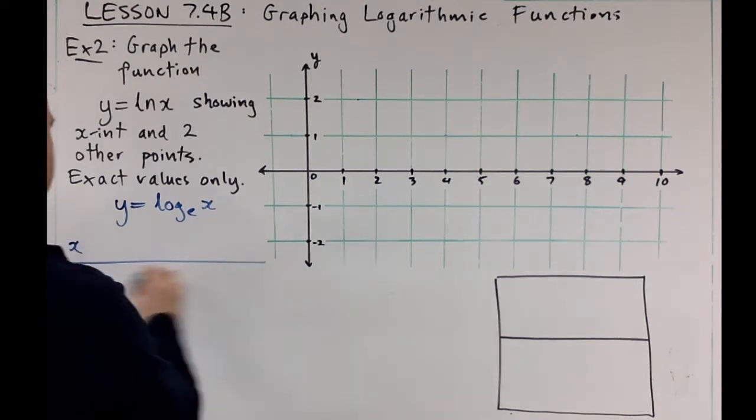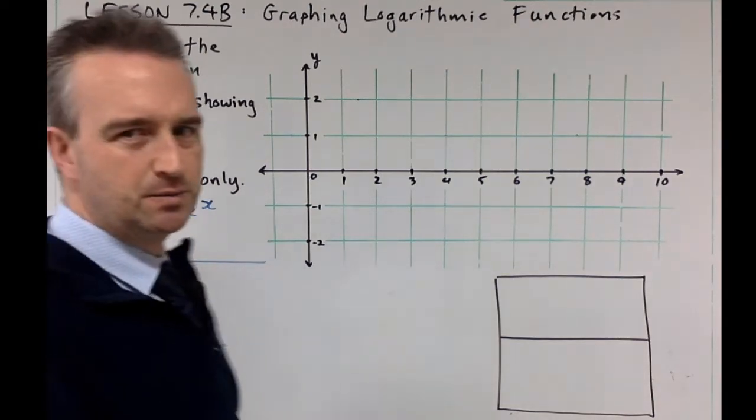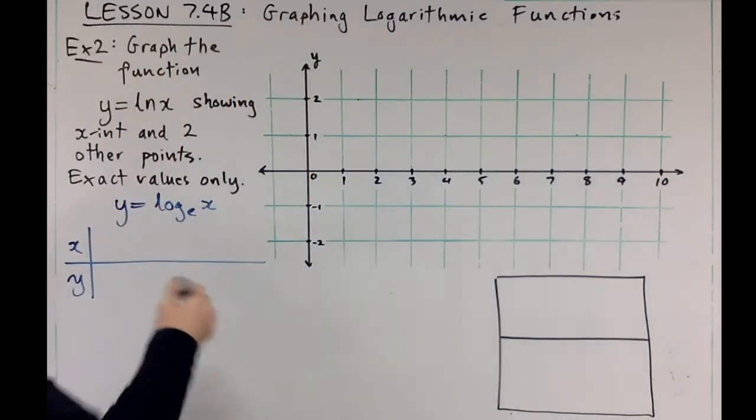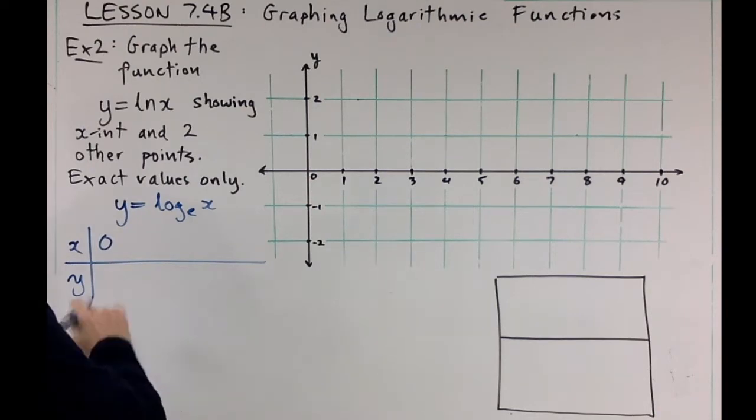This time we're going to pick smart x values, we don't just do one two three. We know we can't do negative values so we'll skip those. Zero doesn't work either but I'll just put zero in.